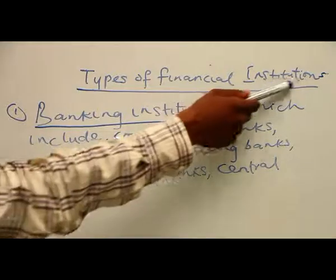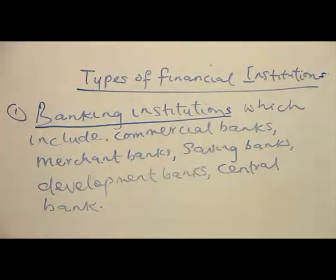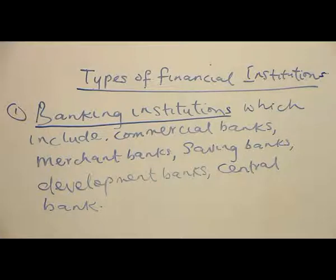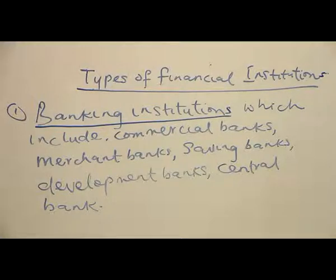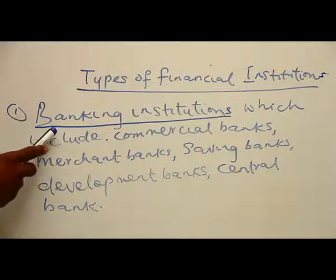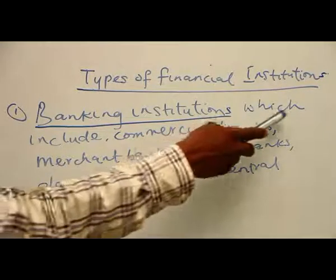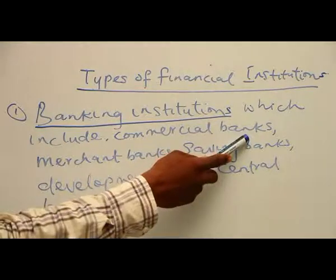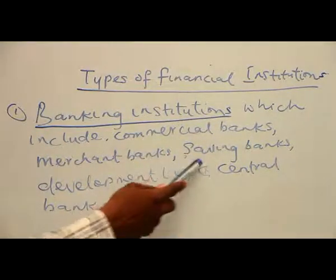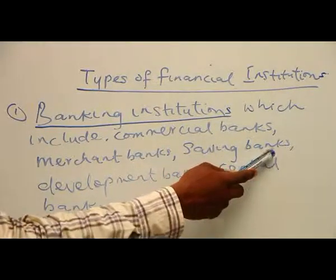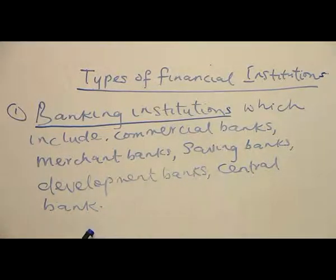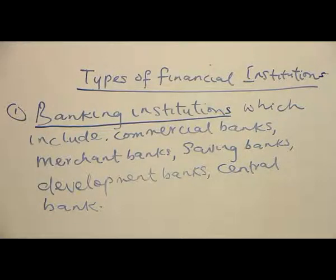Types of financial institutions. Number one: banking institutions. People need to understand that when we are talking about financial institutions, we are not only talking about banking. We group them into two. The first one is banking institutions, which include commercial banks, savings banks, development banks, and central banks. All these are grouped under banking institutions.